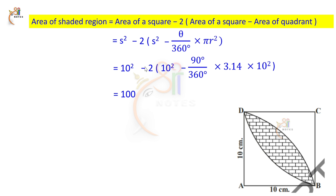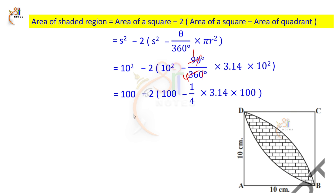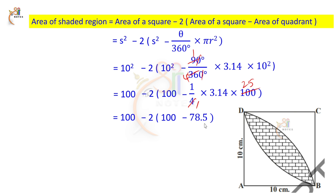So: 100 minus 2 into bracket 100 minus 1 by 4 into 3.14 into 100. Divide 100 by 4 to get 25. Then 3.14 into 25 equals 78.5. So inside the bracket: 100 minus 78.5 = 21.5. Then 2 into 21.5 = 43. Now: 100 minus 43.